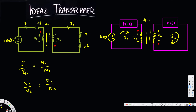For I1 over I2, we decide the sign based on the current entering the dot. If both currents are entering the dot, the sign is negative; if one is entering and one is exiting, it's positive. In our case both I1 and I2 are entering the dot, so it's negative. For V1 and V2, if both dots are on the positive side it's positive; if one is positive and one is negative, it's also negative. So we get both signs negative.